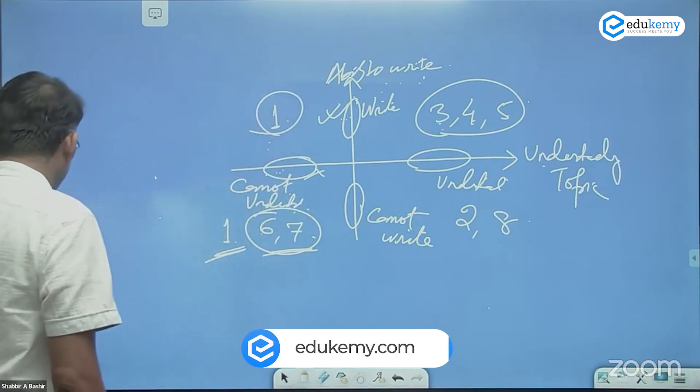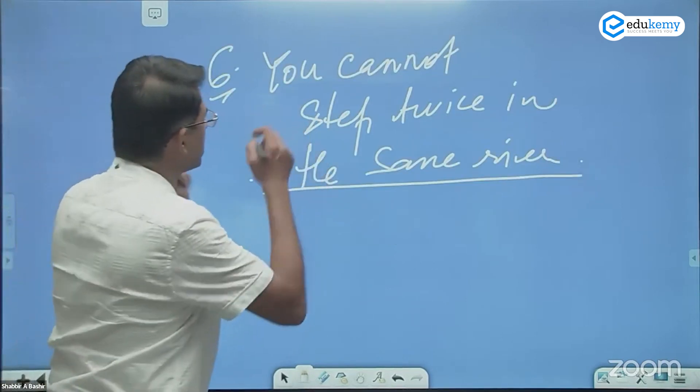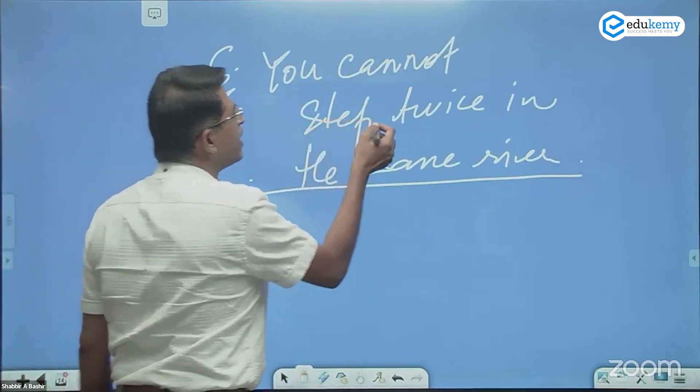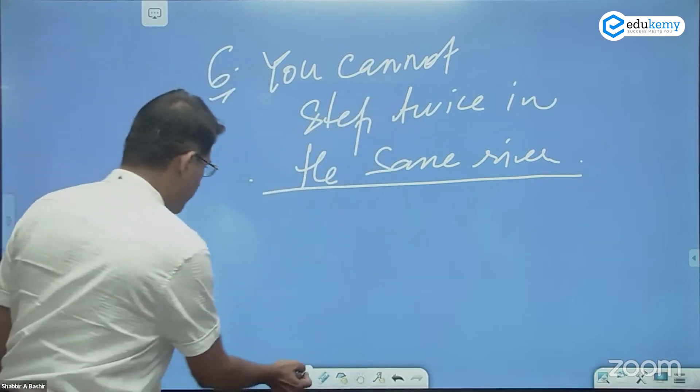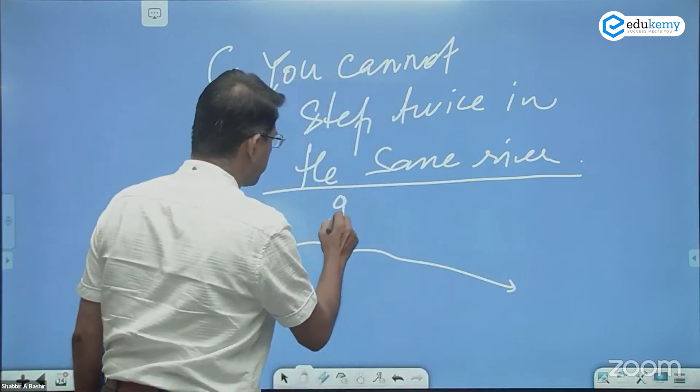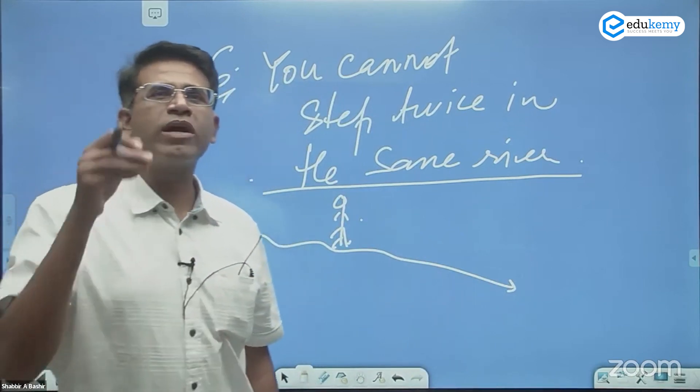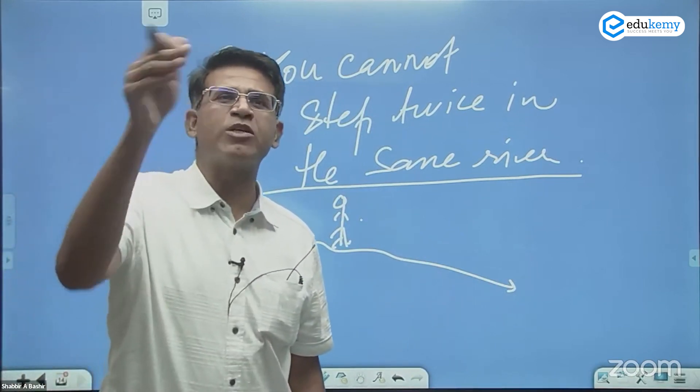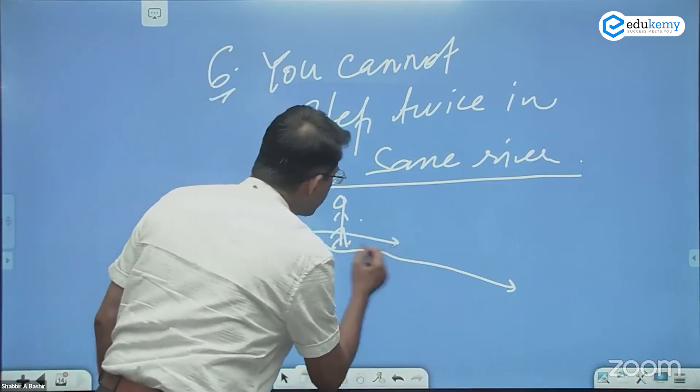So what does this topic mean? Now see what this topic says. You tell me first: why can we not step in the same river twice? If a river flows and somebody stands here, why am I saying you cannot step on the same river twice? Because the water keeps on moving.